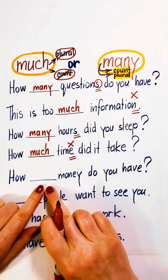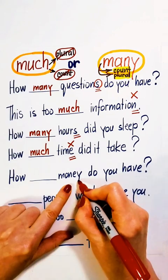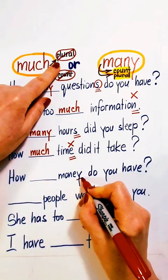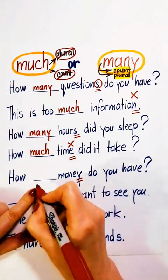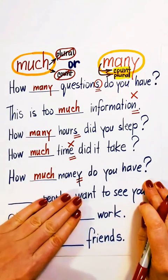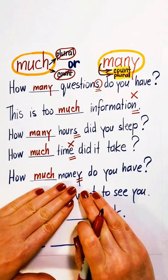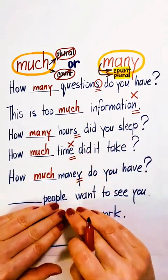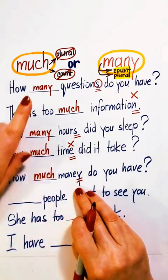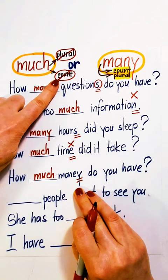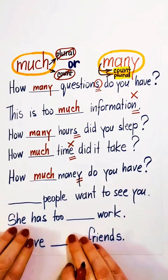How much or how many money do you have? Money is a non-count noun. It doesn't have a plural form. Use much. How much money do you have? Wait — you cannot count money? You can count dollars or euros, but you do not count money. Use much. How much money do you have?